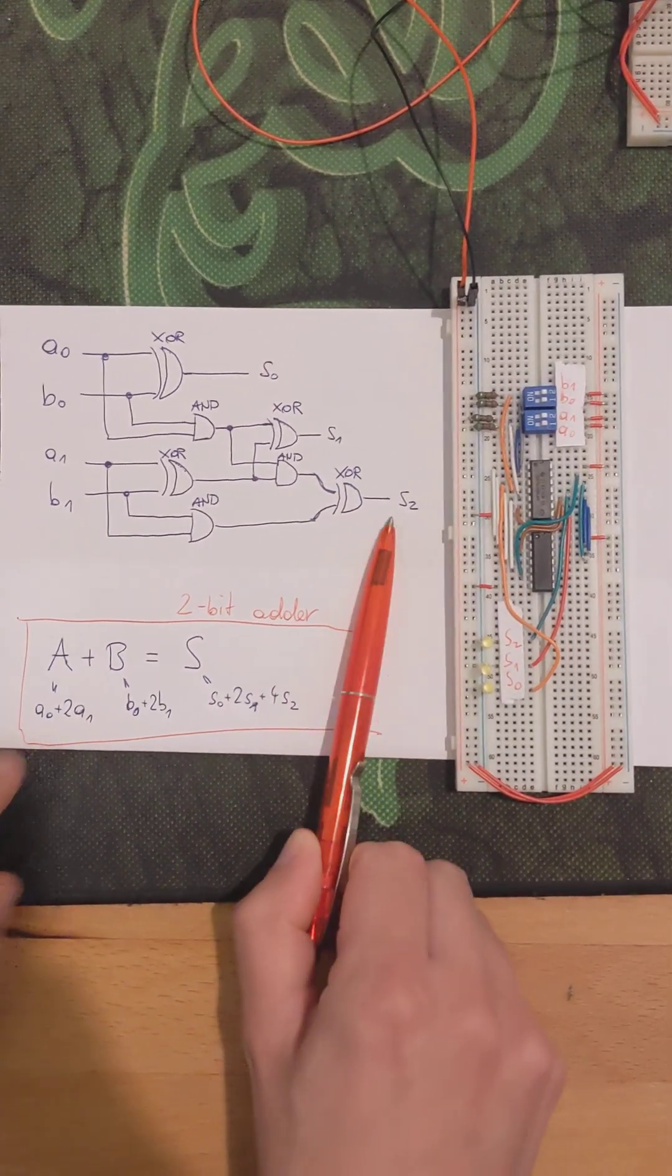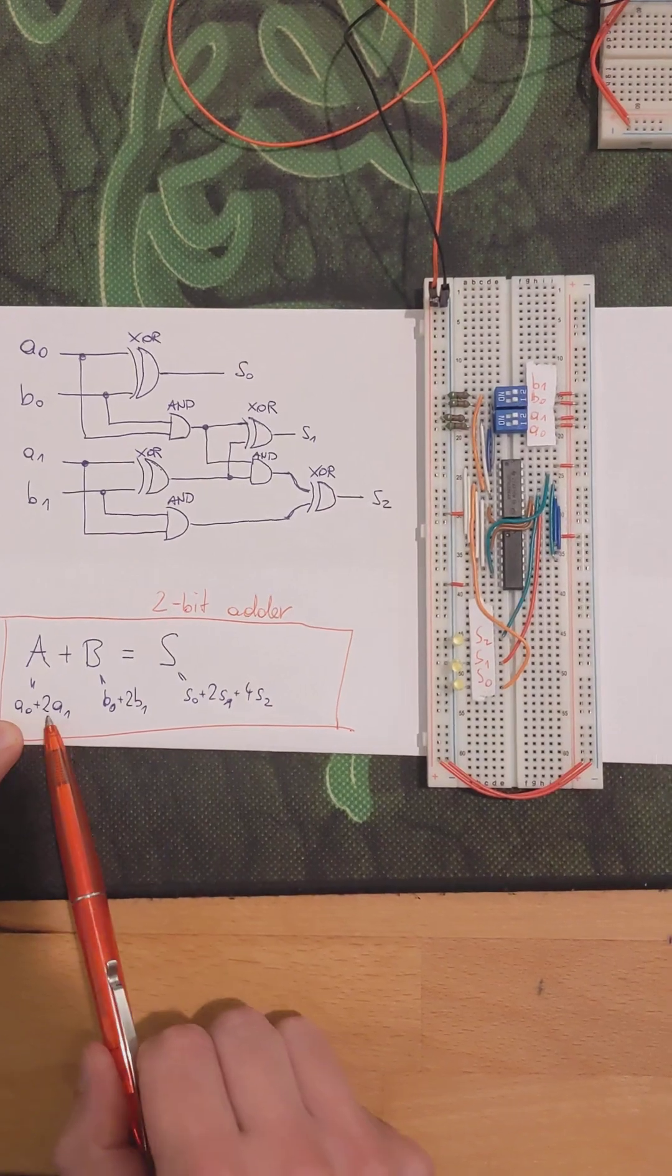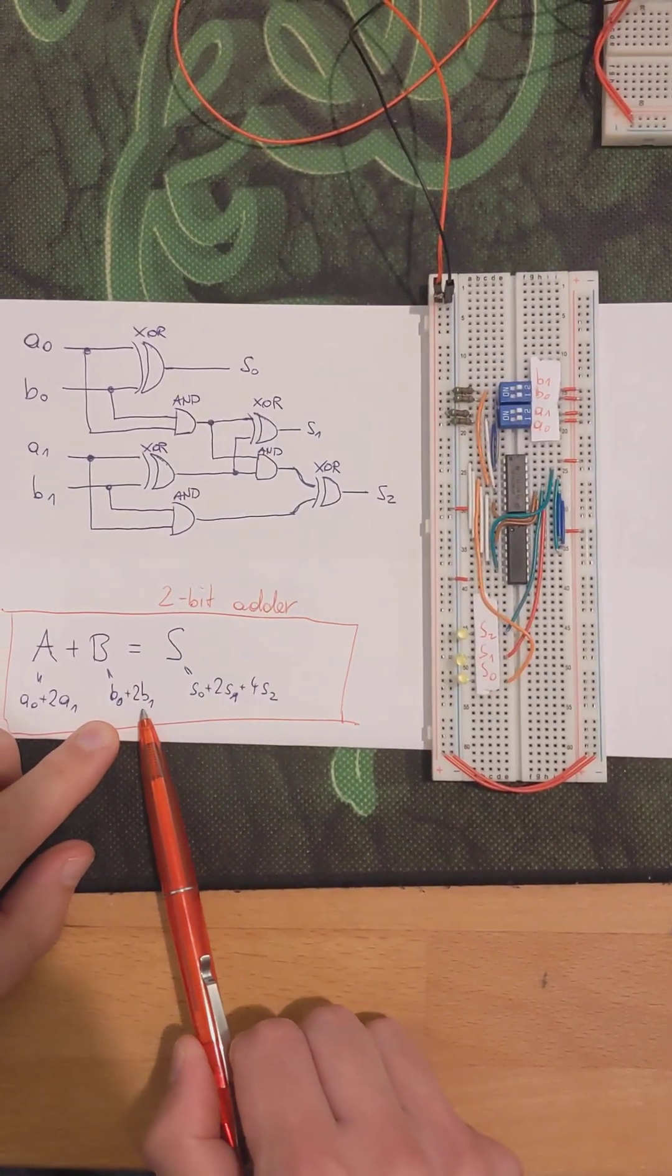So this is the carry bit in the end. A is represented as A0 plus 2 times A1, and B is represented as B0 plus 2 times B1, and this is exactly what you encode here.